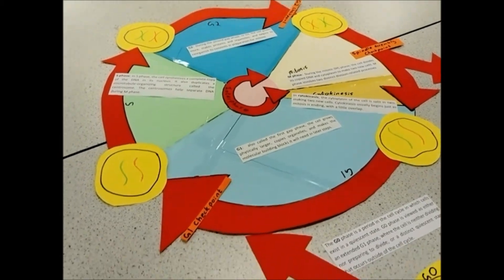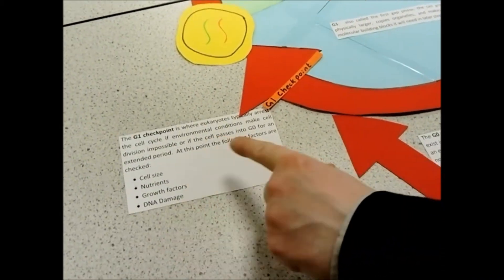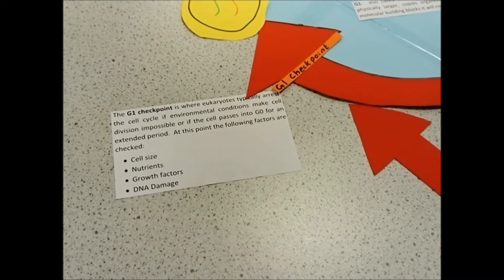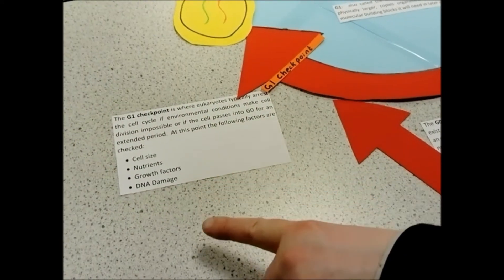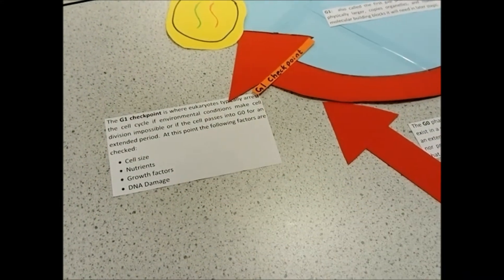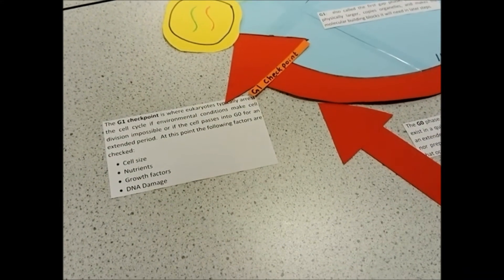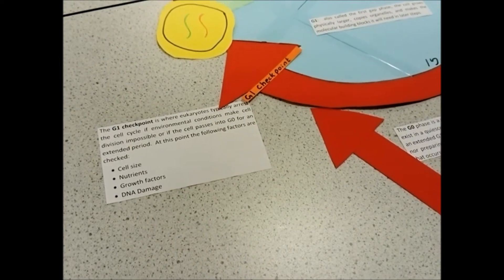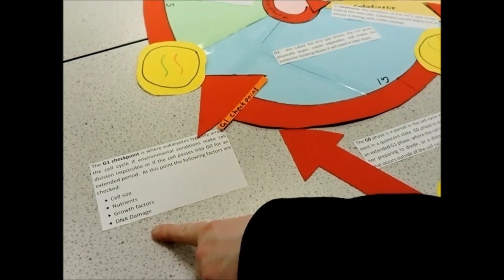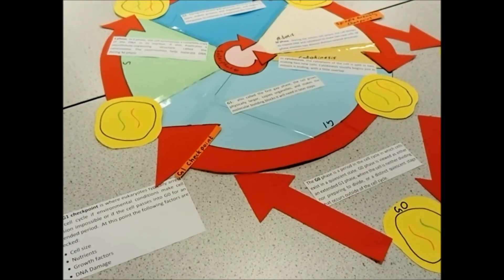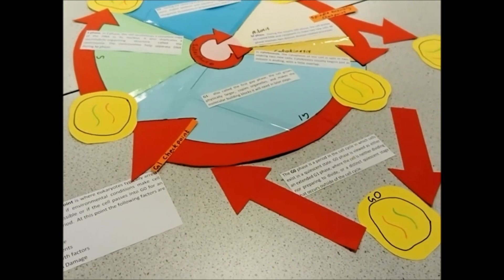The G1 checkpoint checks the cell size to make sure it's big enough to divide. It checks that it's got enough nutrients. It checks that there's enough growth factors. We need the growth factors there to get it to carry on and grow after we go through cytokinesis. And it checks for DNA damage, because you don't want to go and start replicating DNA that's already damaged, or else you'll get mutations happening.